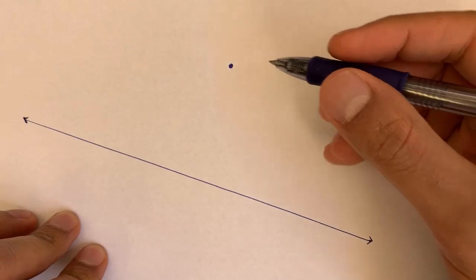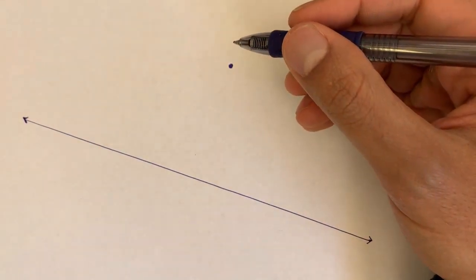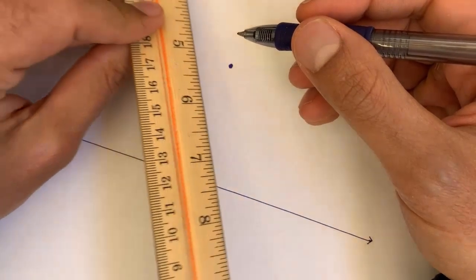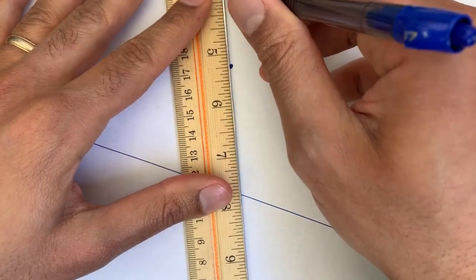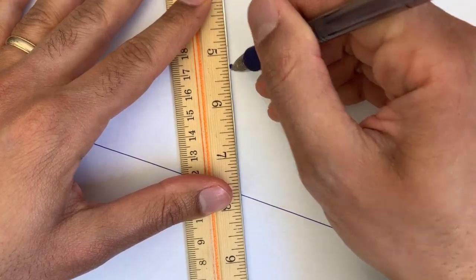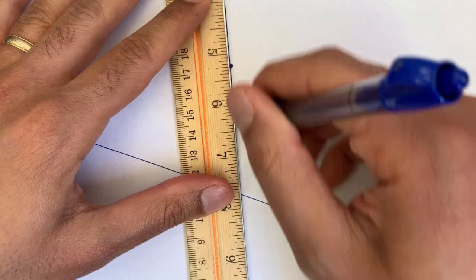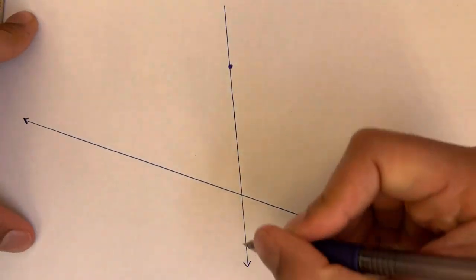Well, the way we can approach it is by creating what will eventually be a transversal between the two parallel lines. So let me draw that. I'm just drawing a line that goes through my point and intersects my original line. So it's going to look like that.